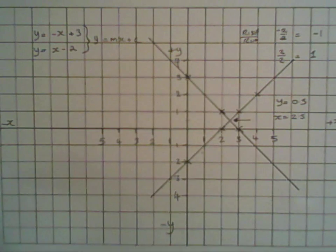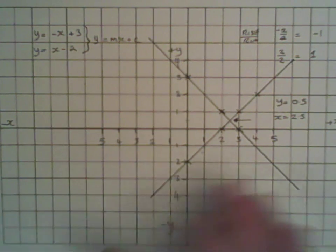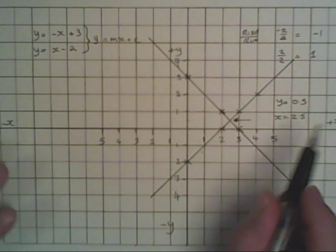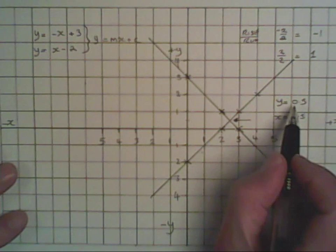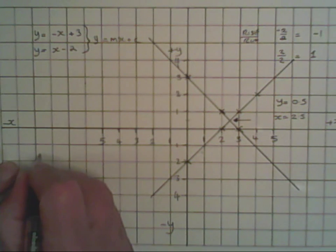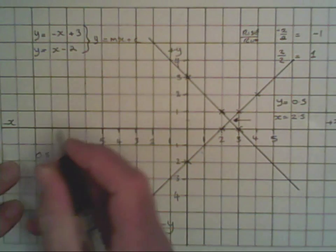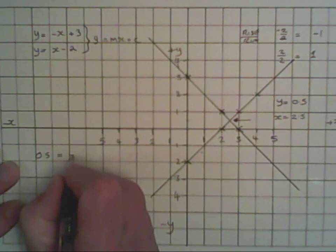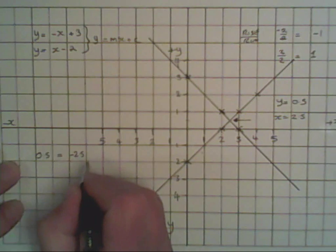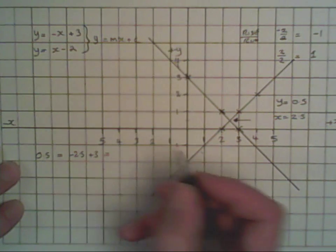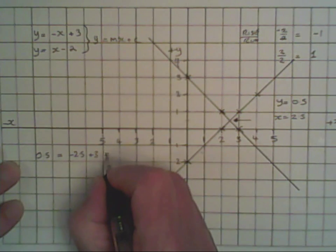Now, the next thing we need to do, we might have made a mistake somewhere. So now what we do is slot the values for y and x into both of the original equations. So we've got y, which is 0.5, equals x, in this case minus 2.5. It was minus mx, and plus 3. Minus 2.5 plus 3 equals 0.5, correct.